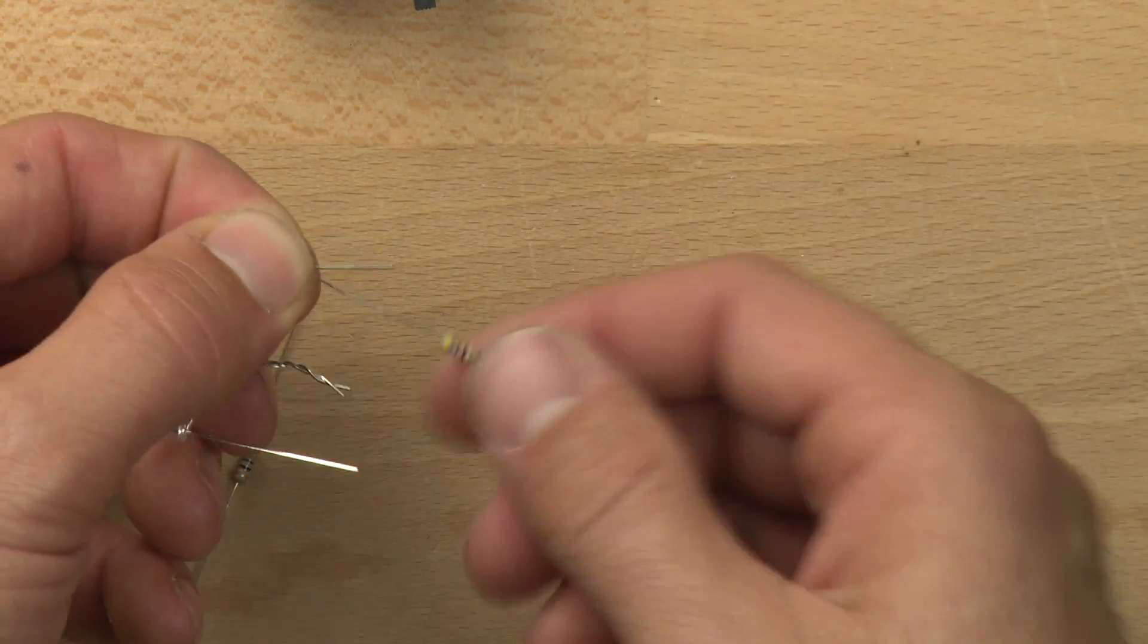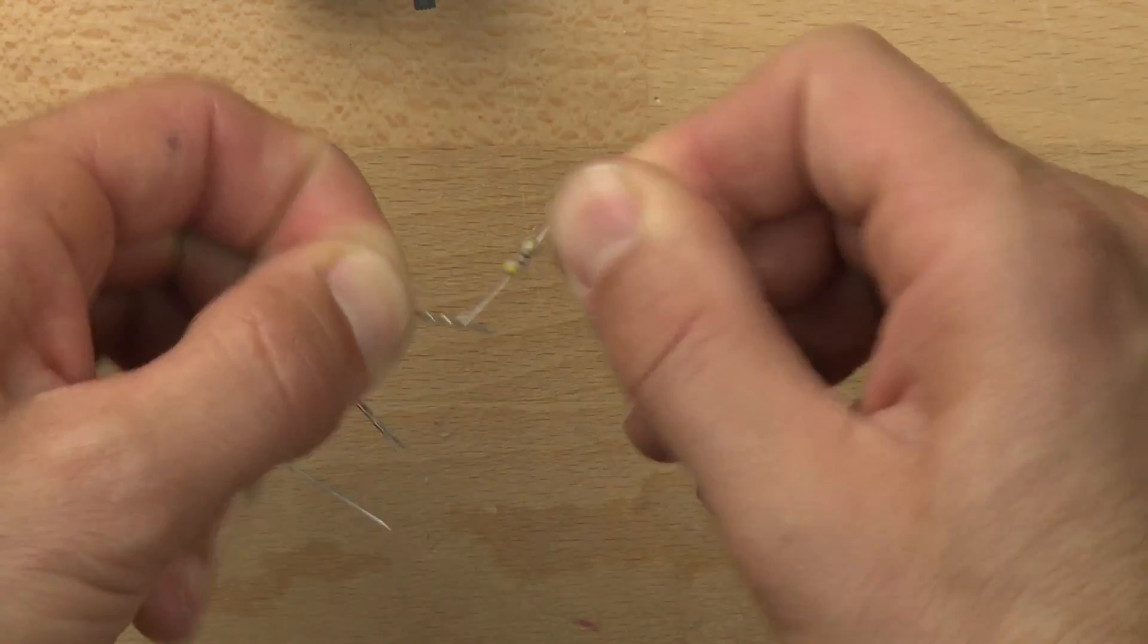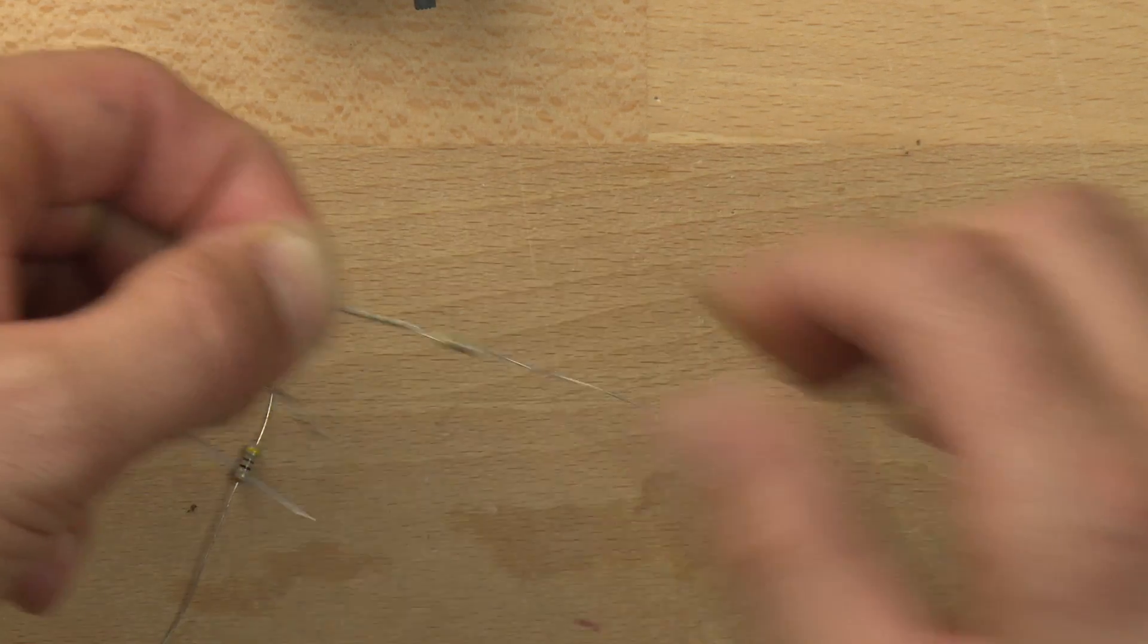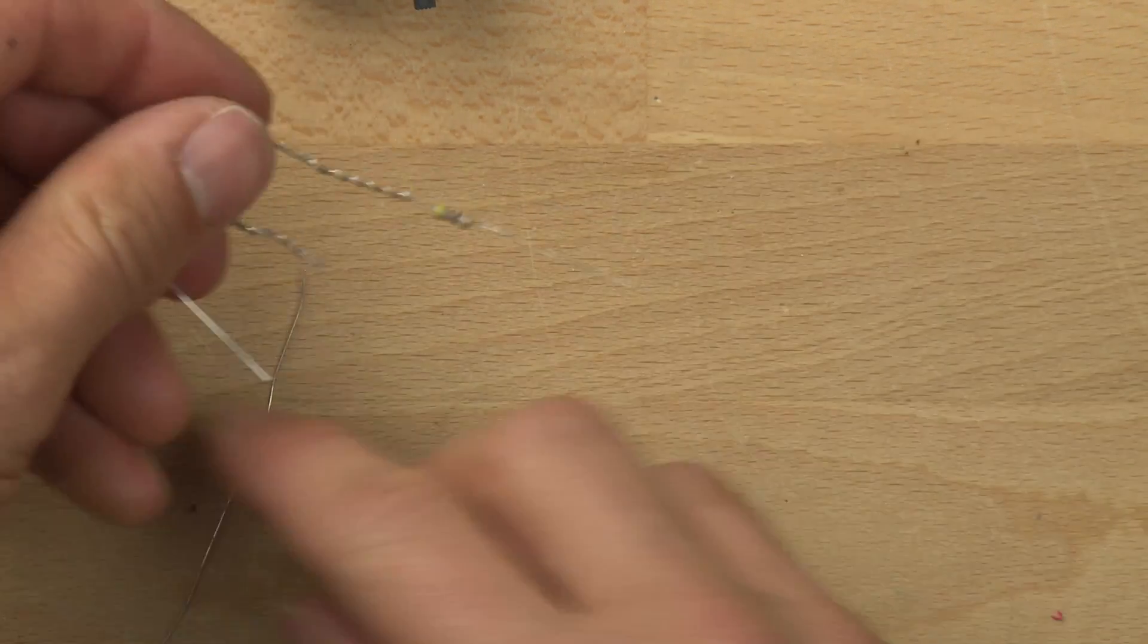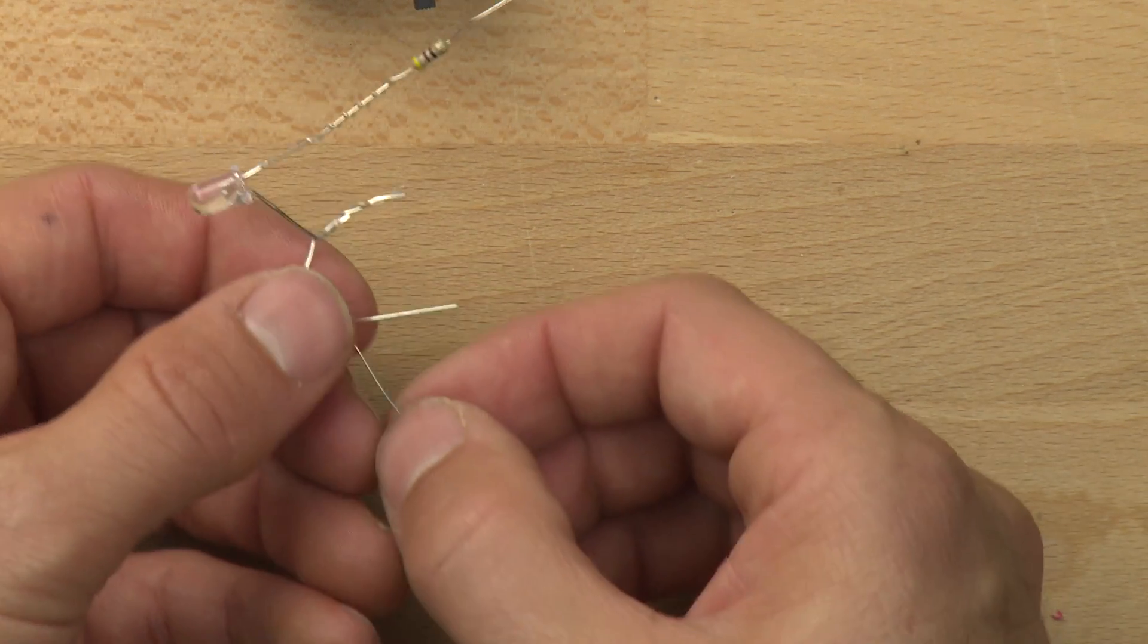So we're going to take a resistor and wind it around the negative leg. The resistors can technically go on the positive leg or on the negative. There we go. And we'll do the same thing on this side here.